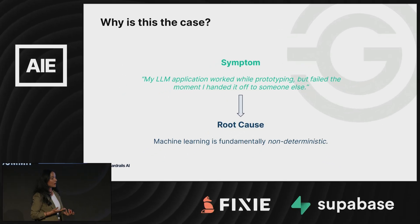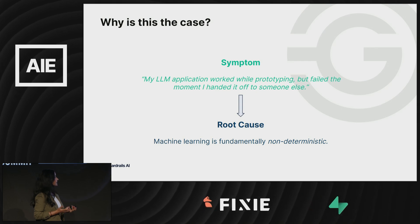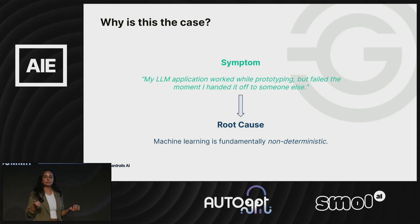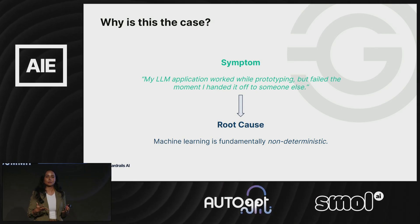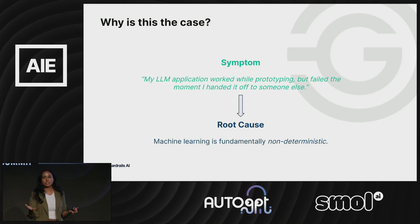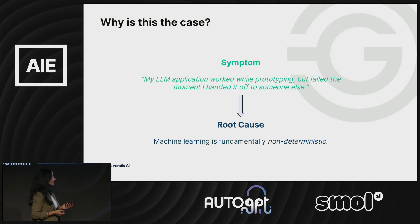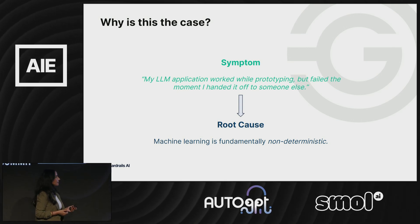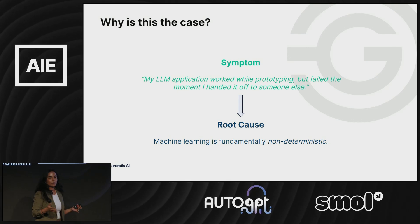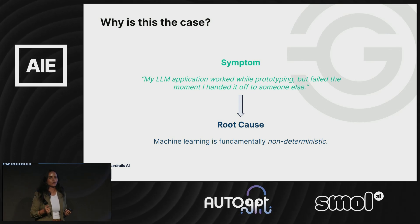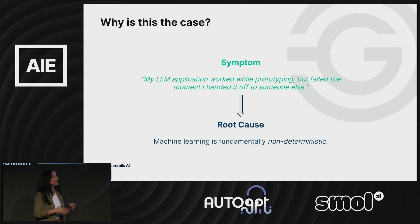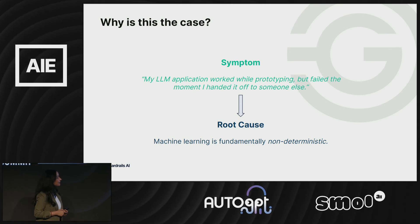So why is this the case? A common symptom that a lot of people experience as they're working with generative AI applications is: my app worked while prototyping, but it failed the moment I tried shipping it out, or even the moment someone else started testing it — it just behaved very unreliably.